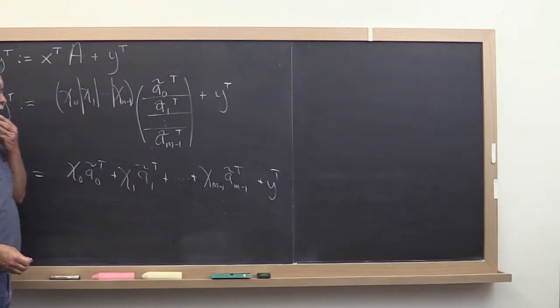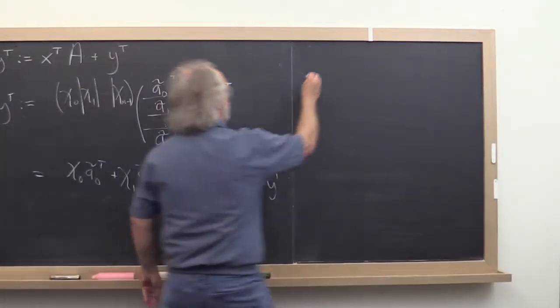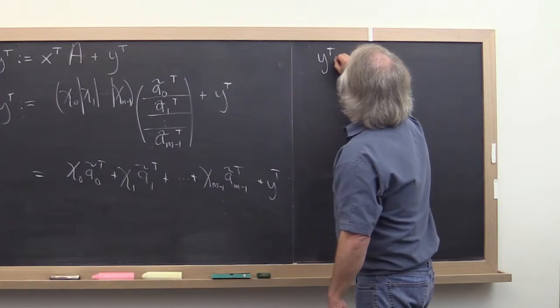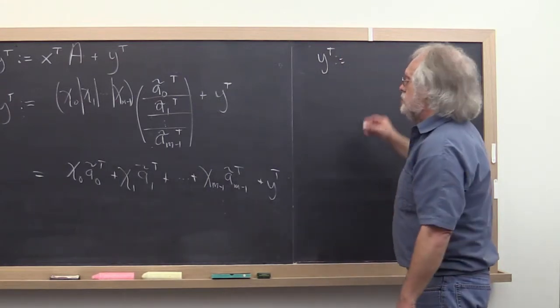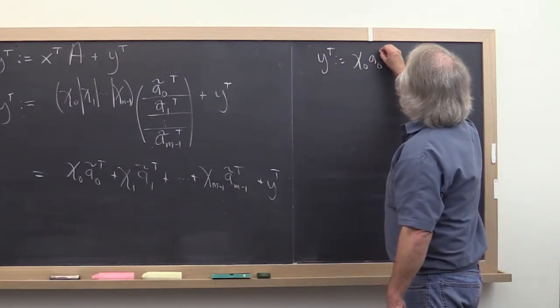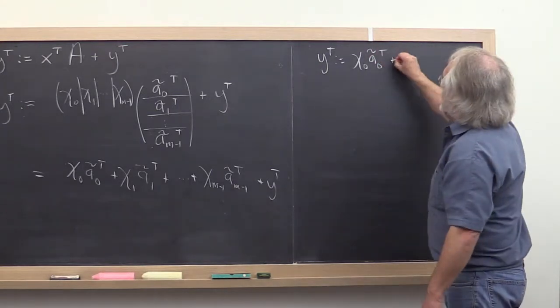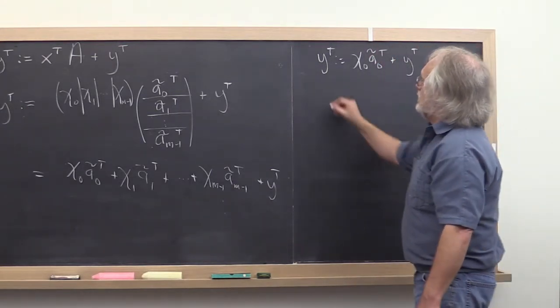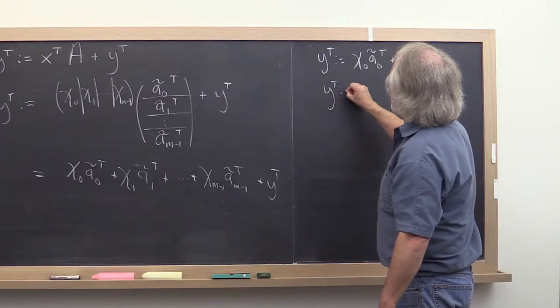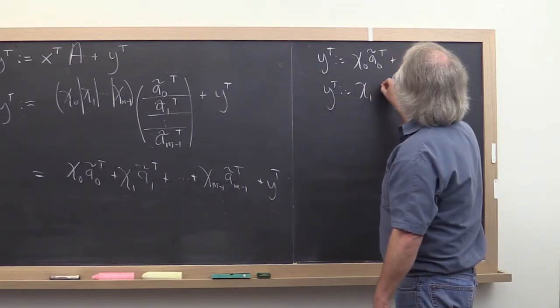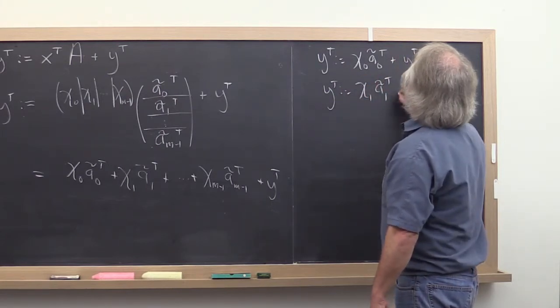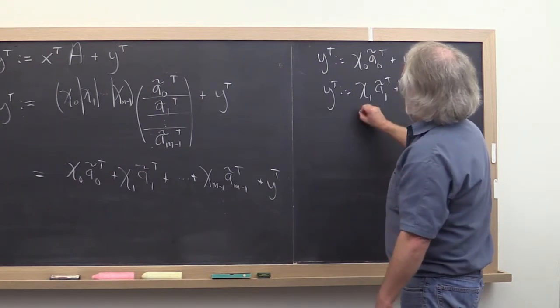Now notice that you can do that by saying first take y transpose and add to it chi zero a zero transpose tilde added to y transpose. And then you can say take the result of that and add to it chi one times a1 transpose and so forth.